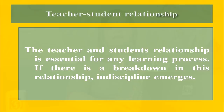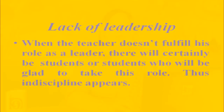Next is teacher-student relationship. The teacher and student's relationship is essential for any learning process. If there is a breakdown in this relationship, indiscipline emerges. A good relationship produces positive outcomes, whereas a bad relationship between teacher and student will bring problems and prevail in the way of indiscipline. Next is lack of leadership: when a teacher does not fulfill the role as a leader and cannot manage the class, there will certainly be students who will be glad to take this role, and thus indiscipline appears.